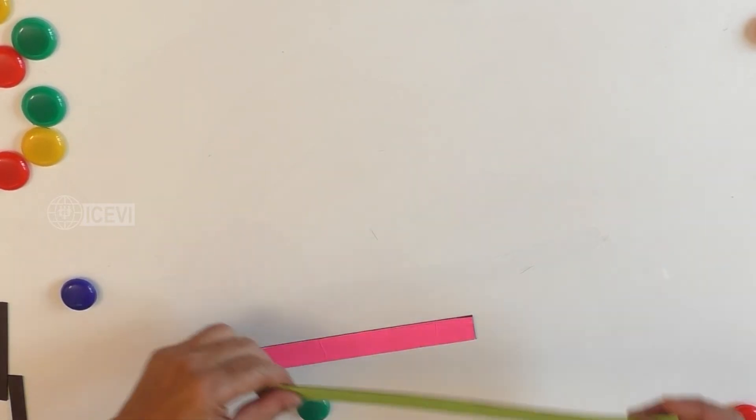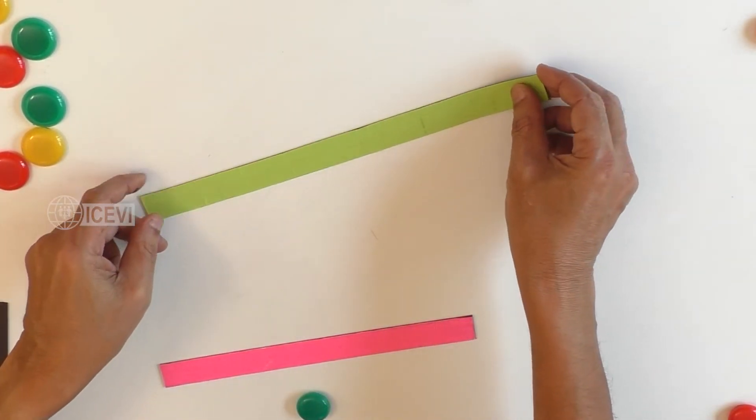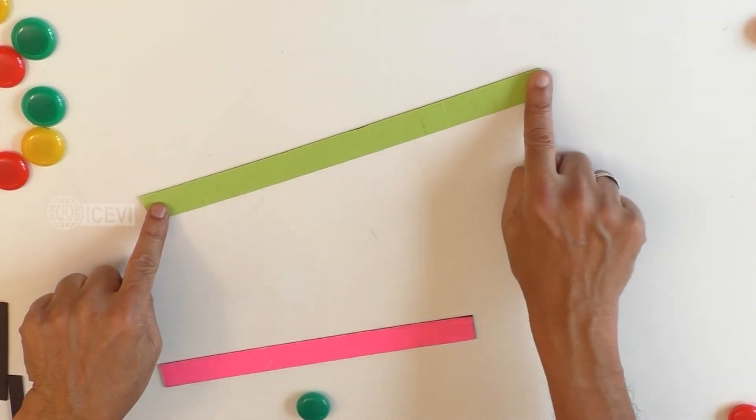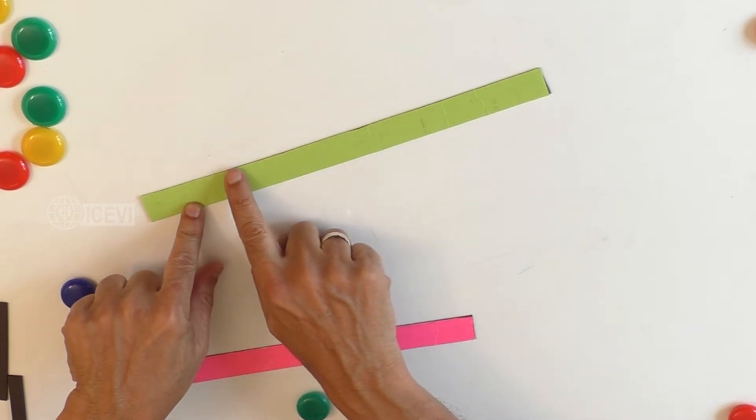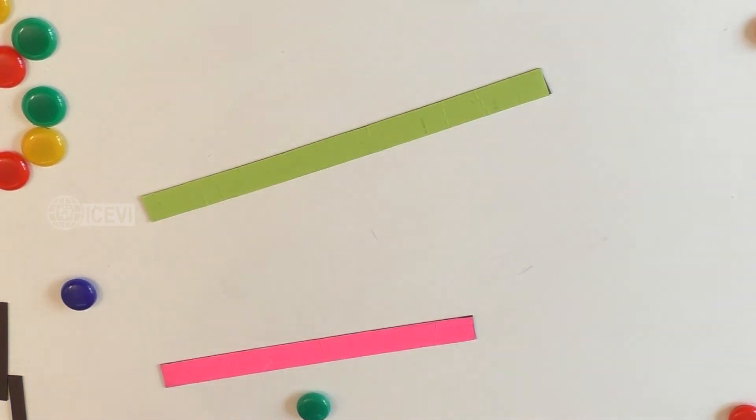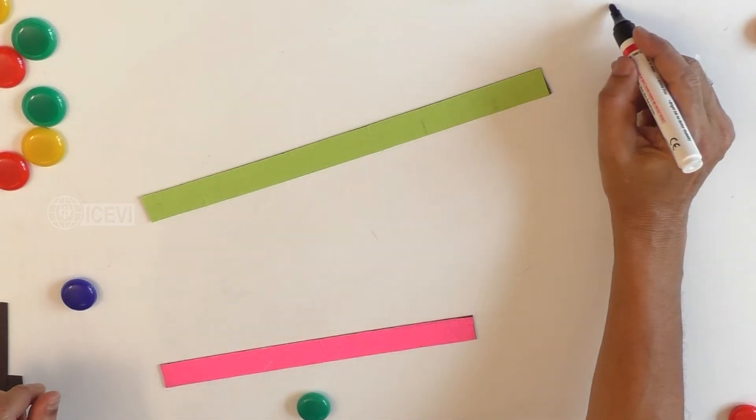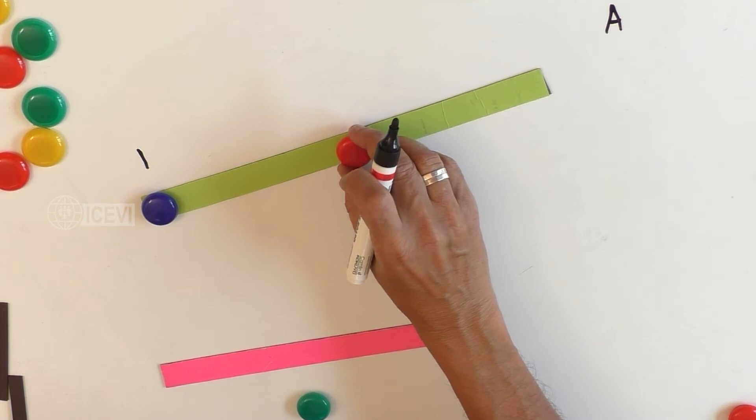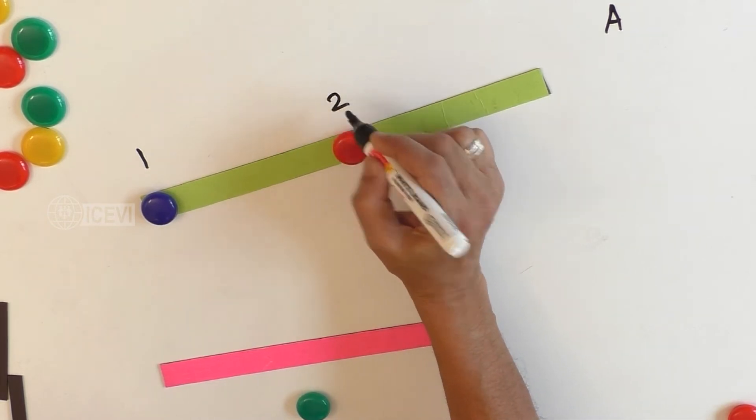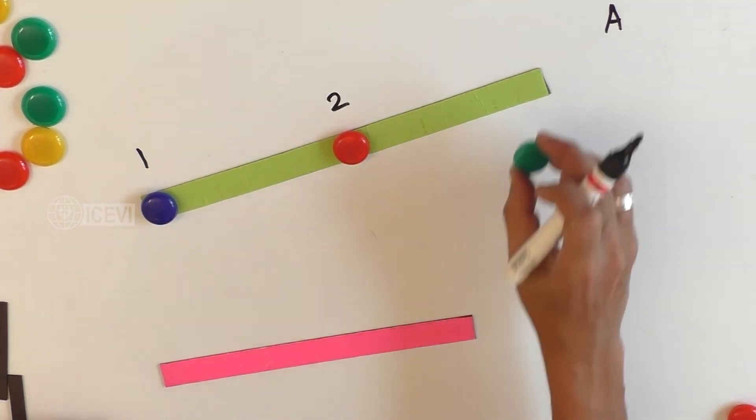Now let us take a line. Linear refers to a line. So collinear means points that lie on the same line. Let us take this line A and assume that there are different points. Now let us take a point, point 1 and point 2 and point 3.